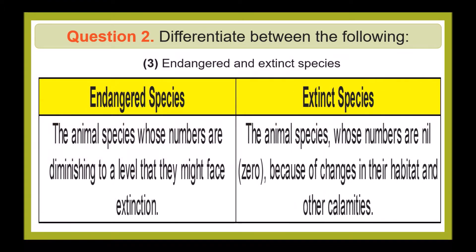Endangered and Extinct species. Endangered species are those animal species whose numbers are diminishing to a level that they might face extinction. Extinct species are those animal species whose numbers are nil, that is zero, because of changes in their habitat and other calamities.